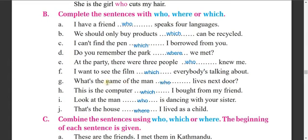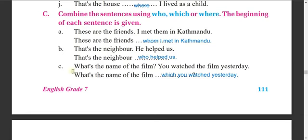H - This is the computer which I bought from my friend. I - Look at the man who is dancing with your sister. J - Just a house where I lived as a child. Now, combine the sentences using who, which, or where. A - These are the friends I made them in Kathmandu - becomes: These are the friends whom I made in Kathmandu. B - That's the neighbor who helped us. C - What's the name of the film which you watched yesterday?